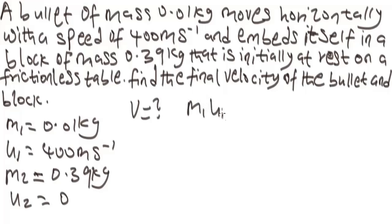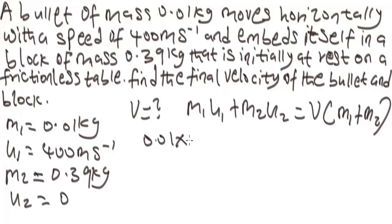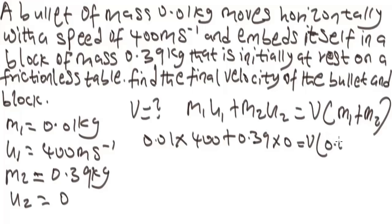So we are going to apply M1U1 plus M2U2 equals V bracket M1 plus M2. We are looking for the final velocity V. When you substitute these values — remember, U is your initial velocity — we have two initial velocities and two masses. So: 0.01 times 400, plus 0.39 times 0, equals V in brackets 0.01 plus 0.39.